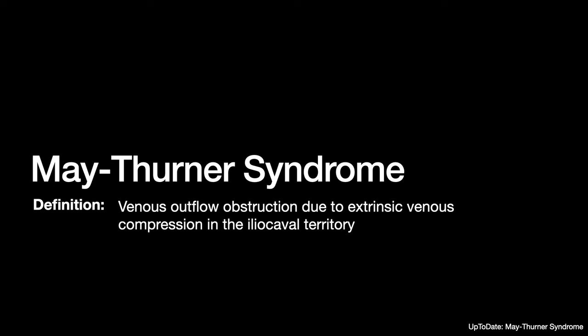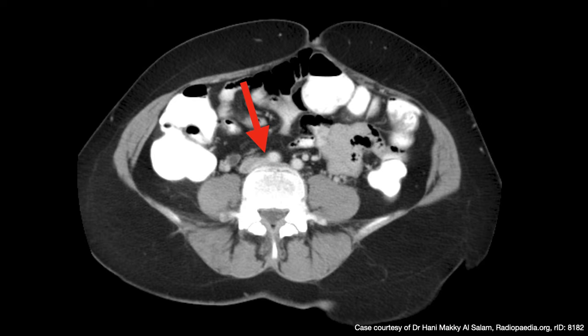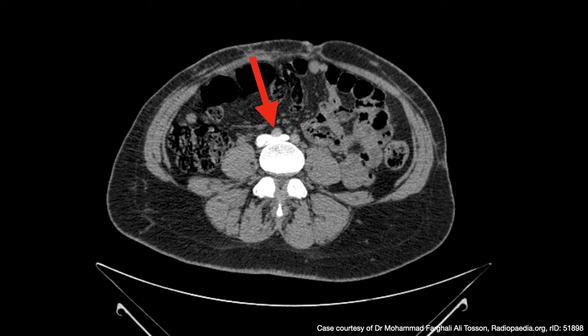By definition, May-Thurner syndrome is a venous outflow obstruction due to extrinsic compression of the iliocaval territory. As the aorta comes down and divides into the iliac arteries, the right iliac artery crosses over the left iliac vein. That crossing can cause extrinsic compression of the left iliac vein, creating a nidus for thrombosis, and patients can present with left lower extremity DVTs.